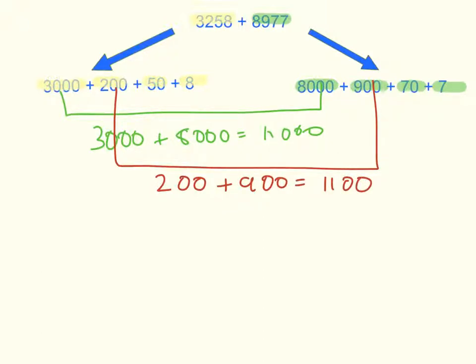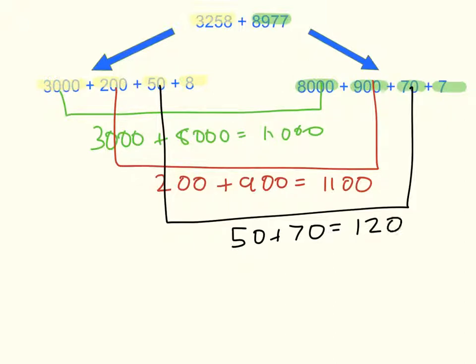Then I added the tens. 50 plus 70 equals 120. Then I added the ones. 8 plus 7 equals 15.